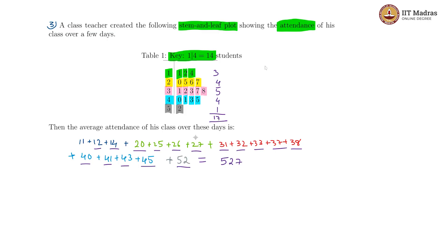So our mean would be 527 divided by 17. So 17 ones and 17 threes gives us 51 which results in a remainder of 17, so 31. So the mean is 31 students a day.